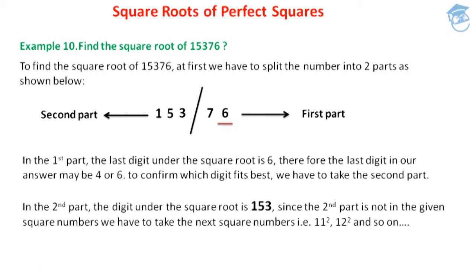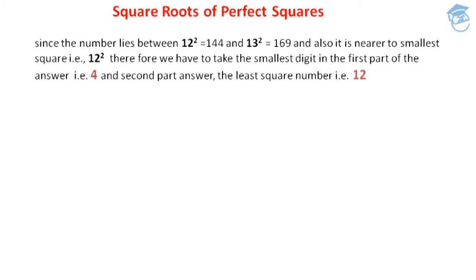If you observe, the number 153 lies between 12 squared and 13 squared, that is 144 and 169. And if you observe very carefully, the number 153 is very nearer to the smallest square number, that is 12 squared, which equals 144.